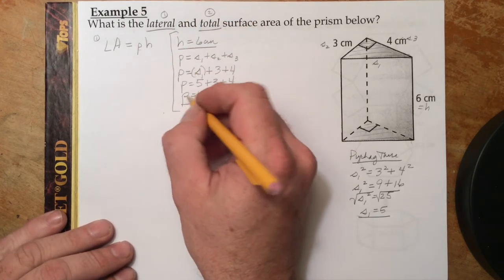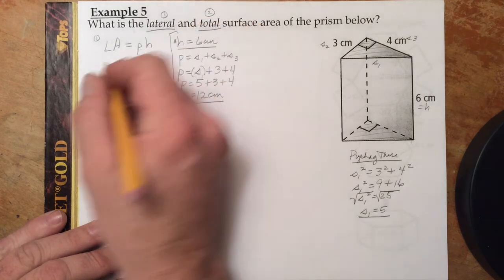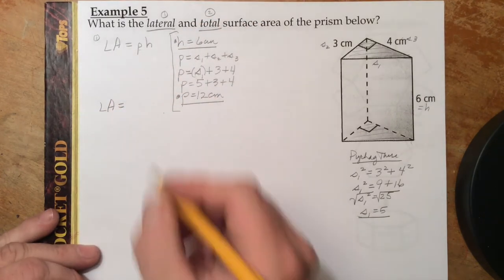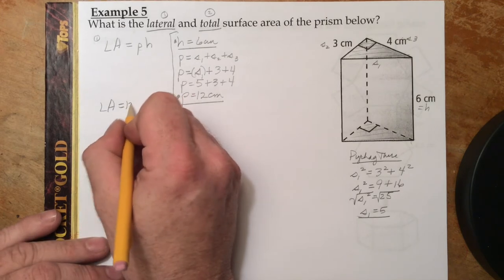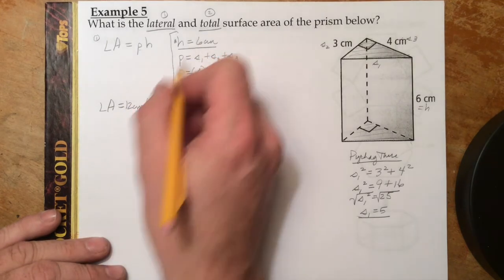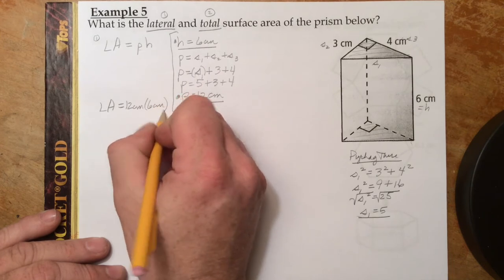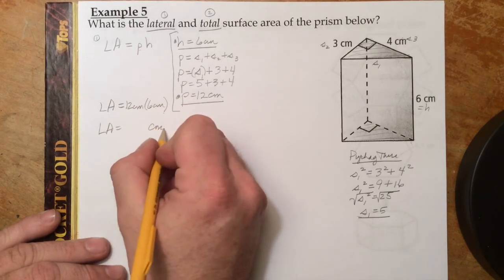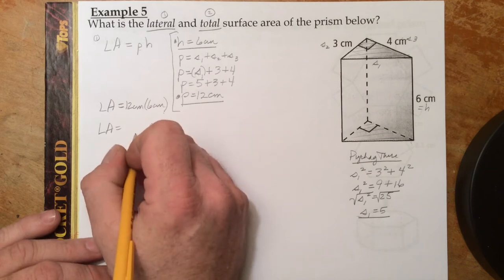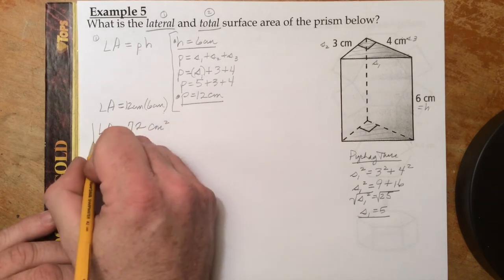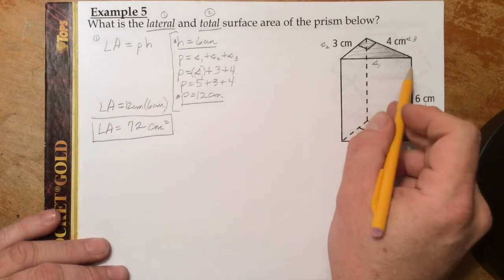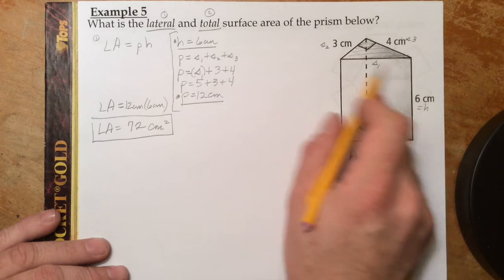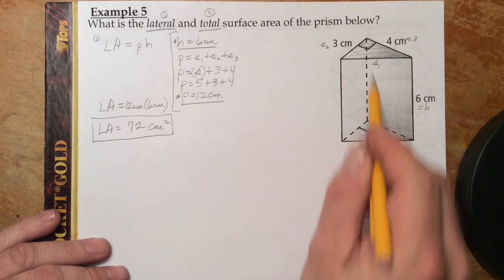So 72 square centimeters is the area of all three lateral faces, not including the two triangular bases.